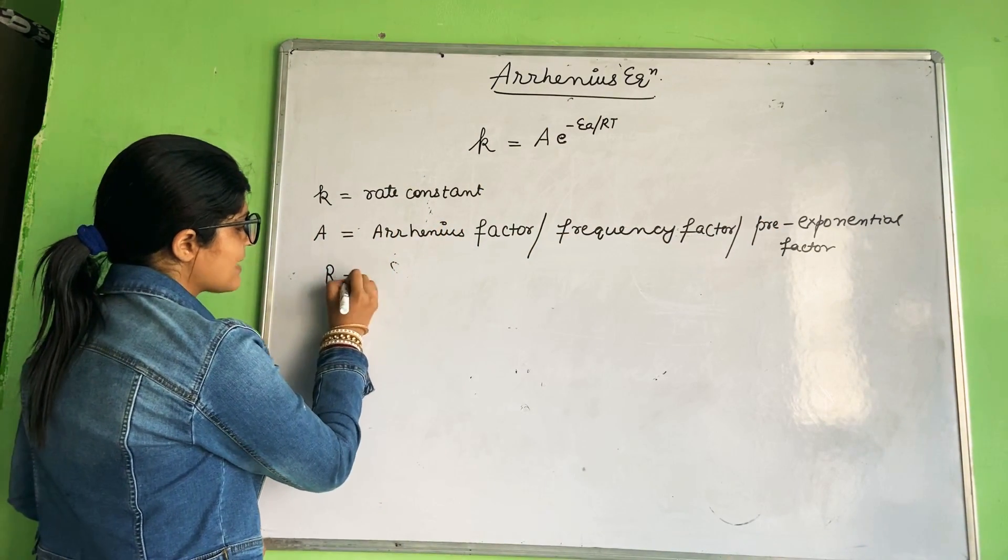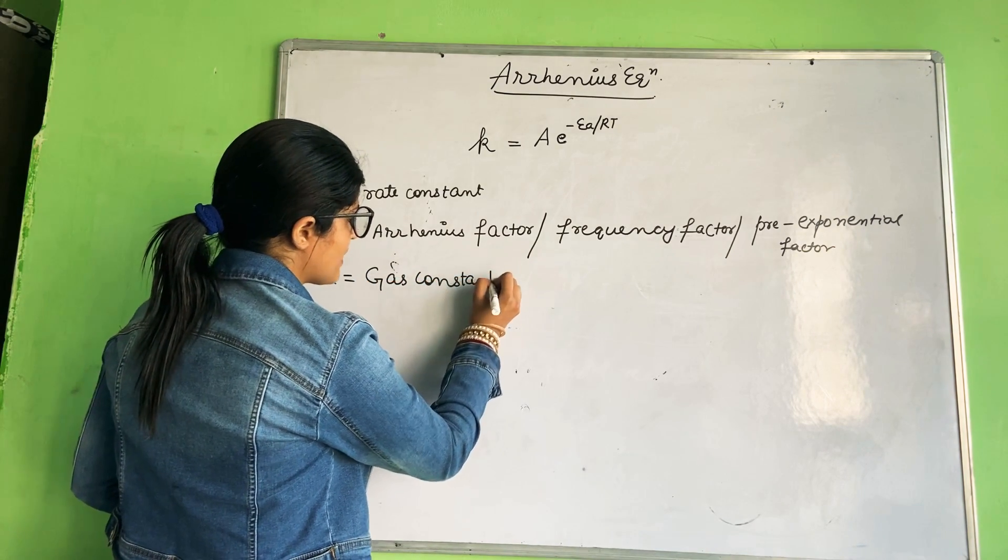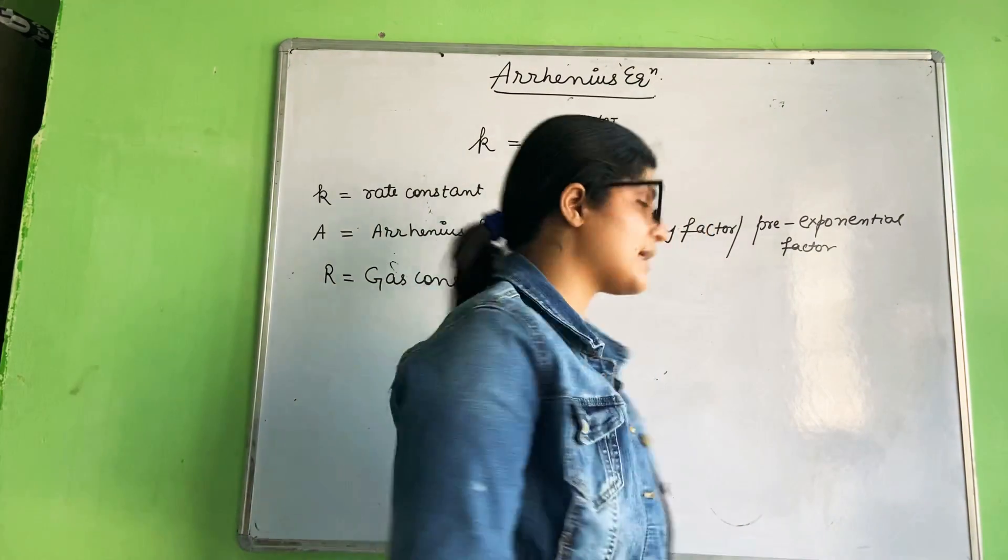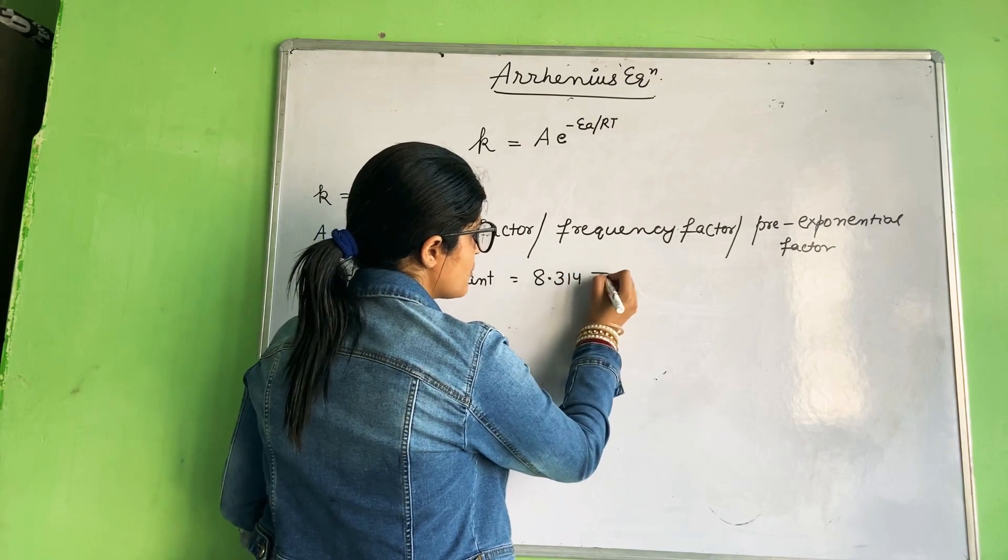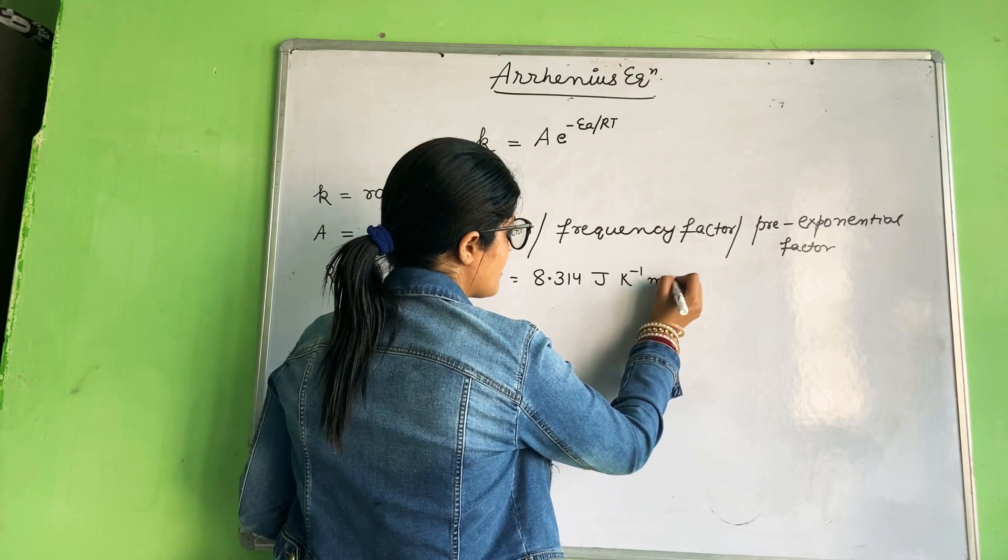R is gas constant. Arrhenius factor is the energy term, that is 8.314 joule per Kelvin per mole. This is the energy term.